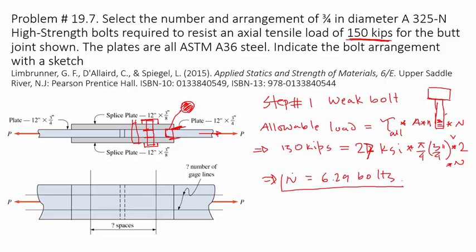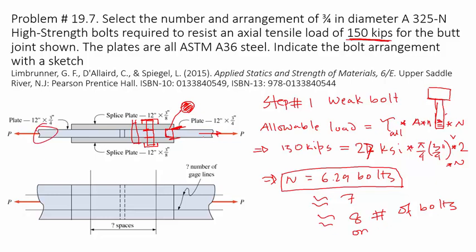You cannot have a fraction of a bolt, so it has to be a whole number. The minimum number of bolts you need is 7. However, we'll see later that an odd number isn't really a good idea, so it's actually going to be 8 bolts on each side of the connection. On each side, you need 8 bolts to carry this 150,000-pound load for this A325N type of bolt. This completes the check for the weak bolt.